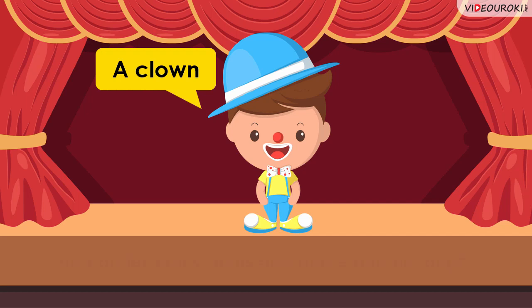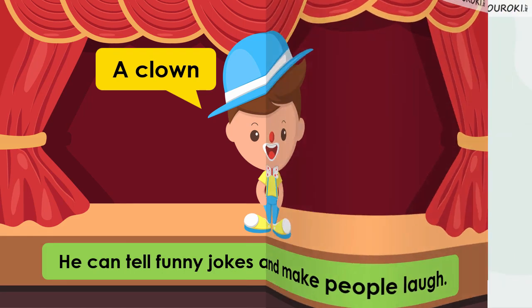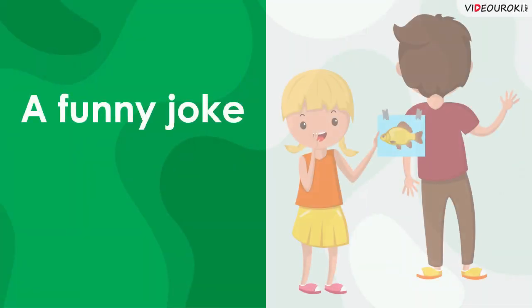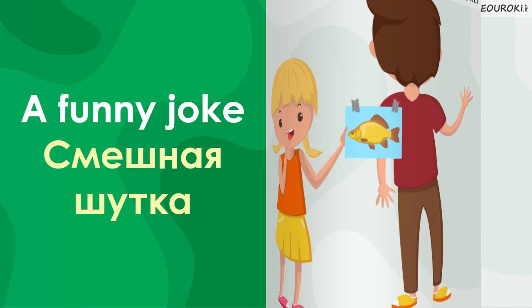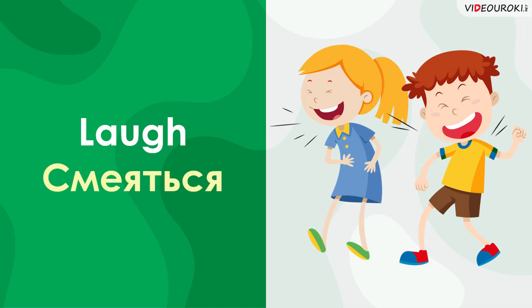Now look, this is a clown — he can tell funny jokes and make people laugh. A clown — клоун. Listen and repeat: a clown. A funny joke — смешная шутка. Listen and repeat: a funny joke. Laugh — смеяться. Listen and repeat: laugh.